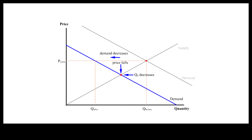Under most circumstances, a change in demand is a result of changes in factors other than the own price of the good in question. For example, a change in demand may be the result of changes in consumer preferences and/or consumer income.